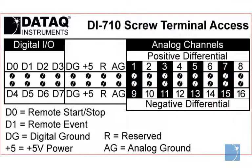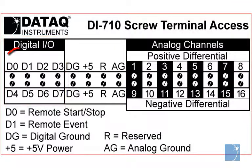The DI710 also includes eight digital inputs, two of which can be used to start and stop recording or insert event marks remotely using a digital control signal.